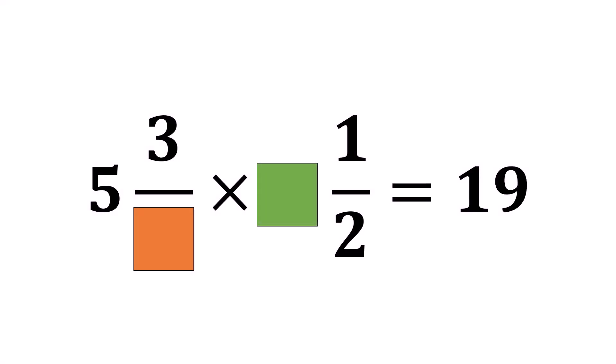Hello everyone. Welcome to my new video. In this video, here's a fun number system puzzle for you. Five and three over some number multiplied by another number and one half equals 19.